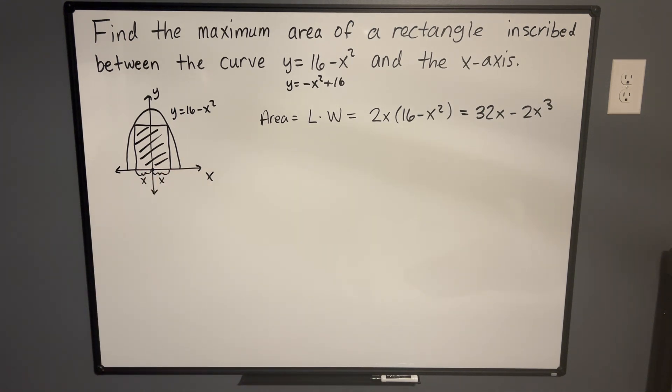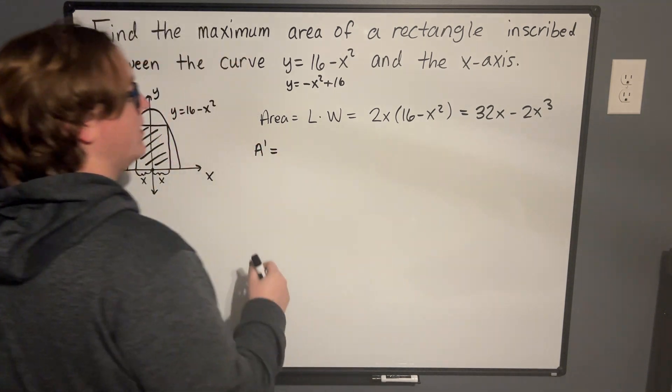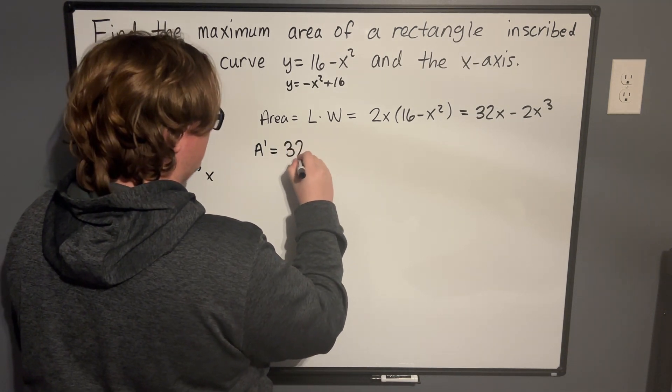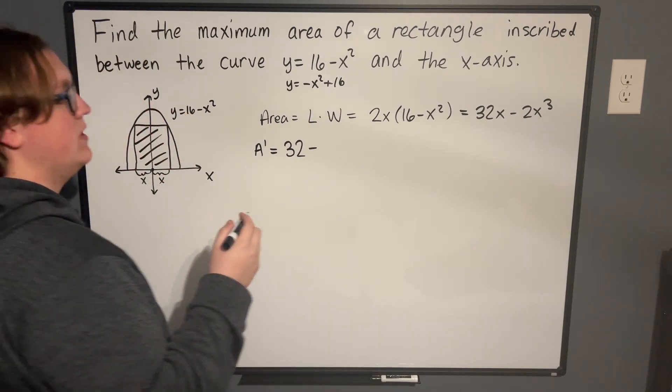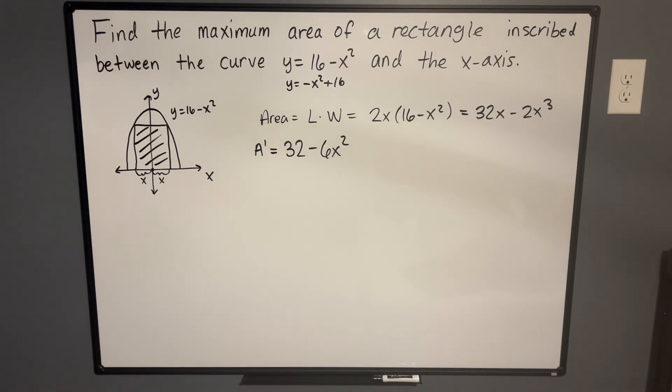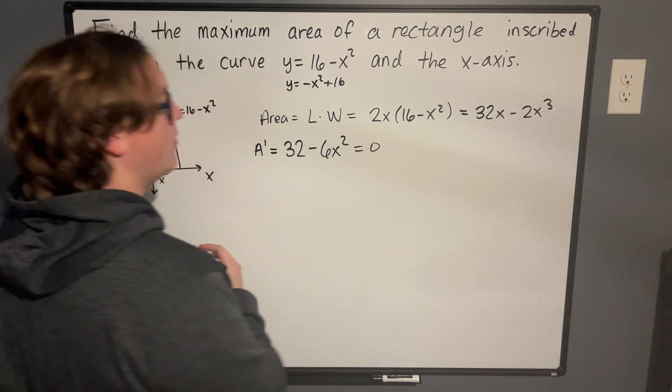So if we want to maximize the area, we need to actually take the derivative and then look for the critical points. So we're going to take, we'll call it A prime for the derivative. So the derivative of our area function, the derivative of 32x is just going to be 32 minus the derivative of 2x cubed is going to be 6x squared. So that is the derivative of our area. Now what we want to do is we want to find the critical point so that we can maximize. So we need to find critical points here. The way we do that is we're actually going to set this equal to 0, and we're going to see what we can solve for.